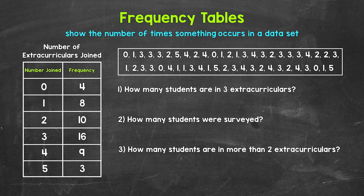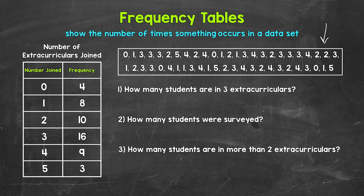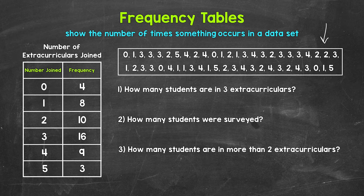Let's jump into our first example — the ungrouped example — where we take a look at a frequency table displaying this data right here. These numbers represent the number of extracurricular activities a group of high school students are involved in: things like sports, theater, band, clubs, basically any after-school activities. A certain number of students were surveyed at a high school to look at student involvement. These are the results — the data as it was collected, not yet organized. This is called raw data.